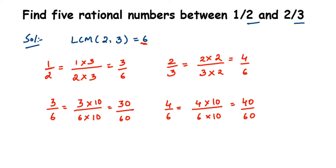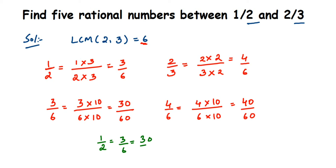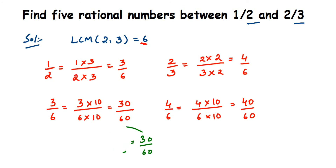Remember: if they're asking for a specific count of rational numbers, take a multiplier greater than that count. If you take a smaller multiplier, you won't get a sufficient number of rational numbers. Also note that 1/2 equals 3/6, which equals 30/60 — they are all equivalent. So finding numbers between 30/60 and 40/60 is the same as finding them between 1/2 and 2/3.